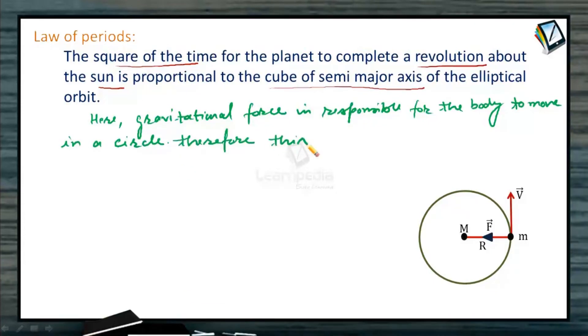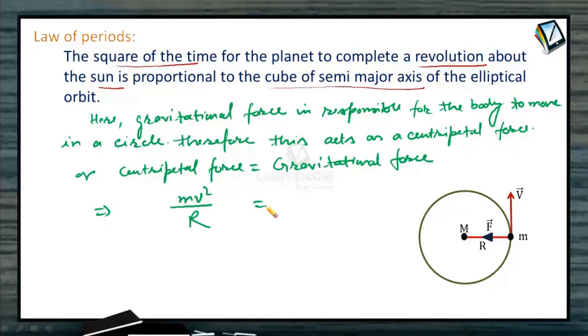Therefore, this acts as a centripetal force, or we can write centripetal force equals gravitational force, or mv²/R should be exactly equals to GMm/R², or solving it further, we can write v² equals GM/R.